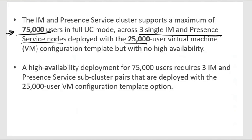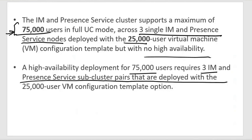The cluster is deployed with a 25,000-user virtual machine configuration template with no high availability. For a highly available deployment supporting 75,000 users, you need an IM&P sub-cluster pair deployed with 25,000 users each. The design structure requires a main cluster plus a sub-cluster for high availability. The sub-cluster acts as a backup on the same site, and priority is given to the same-site backup.